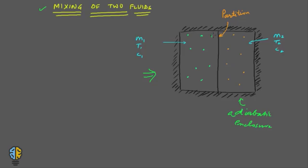Subsystem 1 has a fluid of mass m1, temperature t1, and specific heat capacity c1. Subsystem 2 has another fluid of mass m2, temperature t2, and specific heat capacity c2. Since c1 and c2 differ, both fluids are of different nature. We assume t1 is higher than t2.